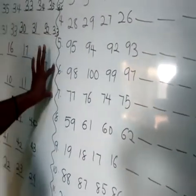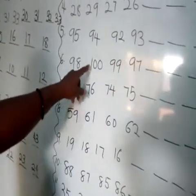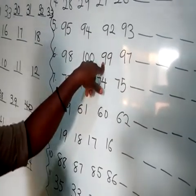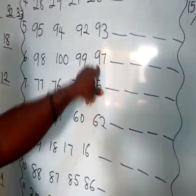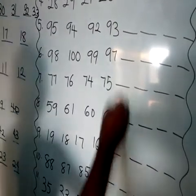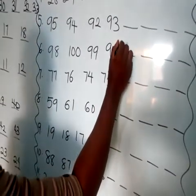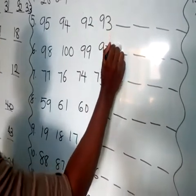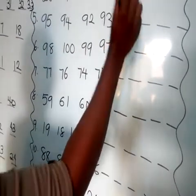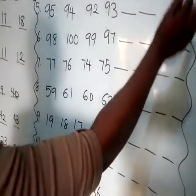Number 6: we have 98, 100, 99, and 97. Which number comes first? We have 97 as our first number. Write it down: 9 and 7 is 97, then 98, 99, followed by 100.